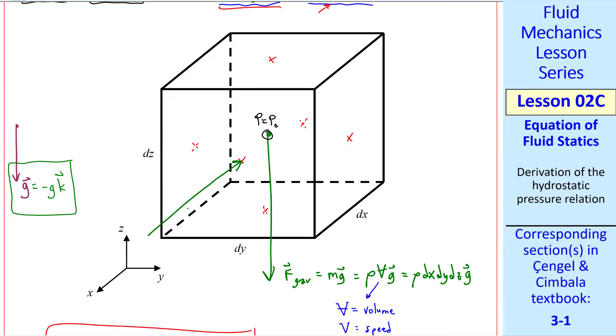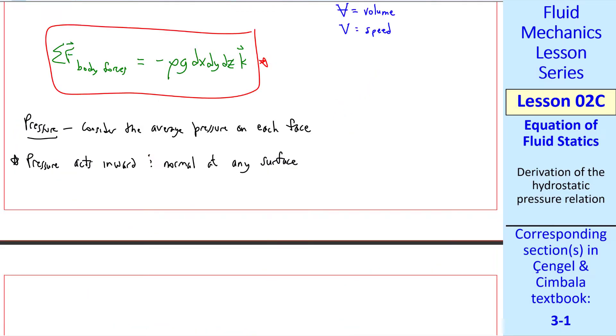Let's consider the pressure acting on the front face and on the back face. Again, I use dashed lines when this is hidden. Recall from a previous lesson that pressure acts inward and normal at any surface. In general, pressure is a function of x, y, z, and t in the Cartesian coordinate system. In other words, pressure is a function of space and time.